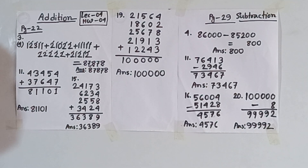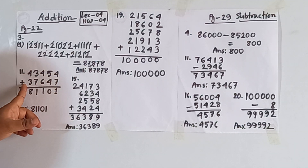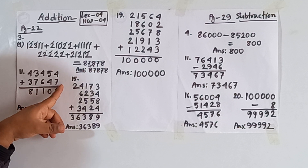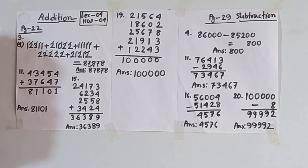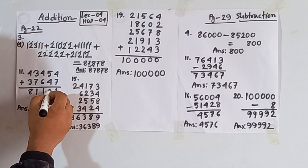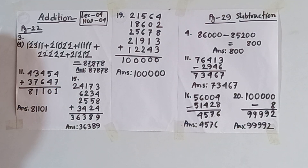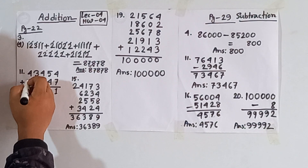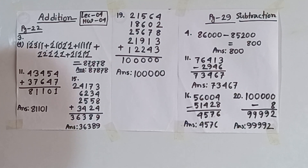We must write the answer — if you don't write the answer, some marks will be deducted from your answer script. Question number eleven: 43,454 + 37,647. First we add the ones place: 4+7=11, write 1, carry 1. 5+4=9, 9+1=10, write 0, carry 1. 4+6=10, 10+1=11, write 1, carry 1. 3+7=10, 10+1=11, write 1, carry 1. 4+3=7, 7+1=8. So the answer is 81,101.